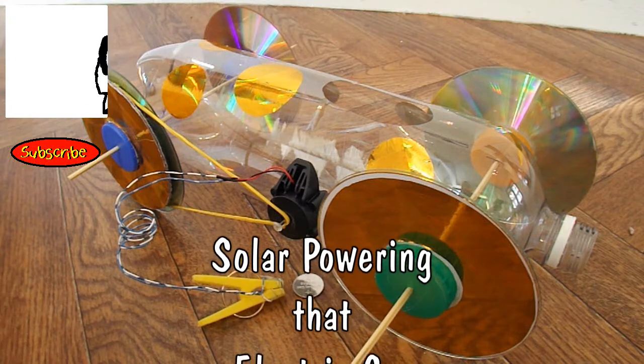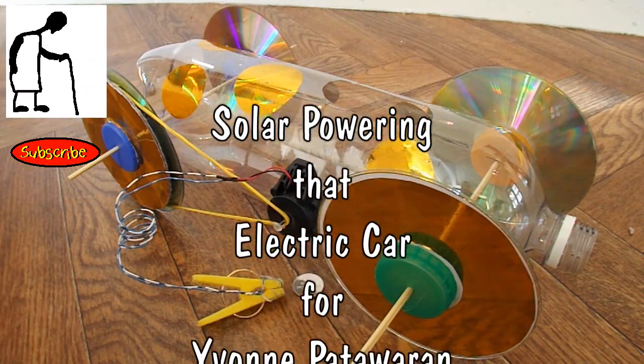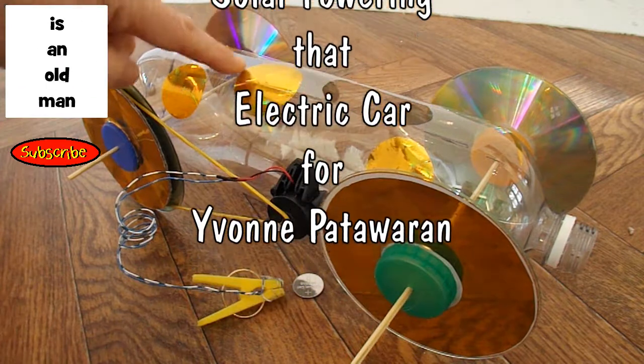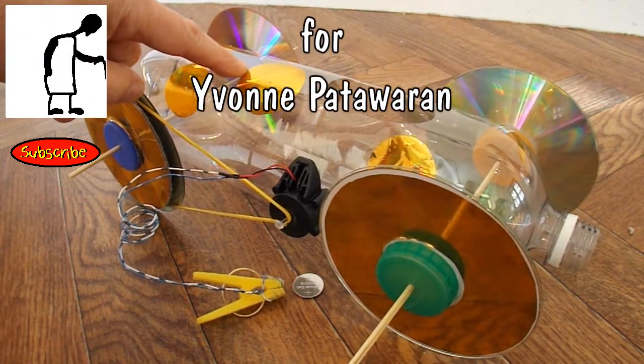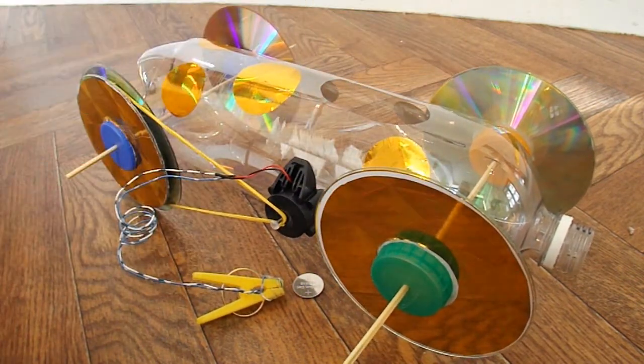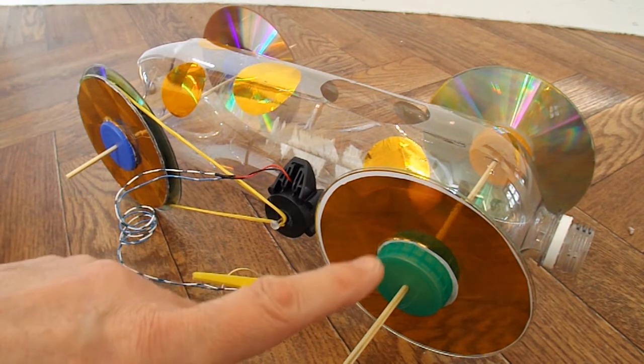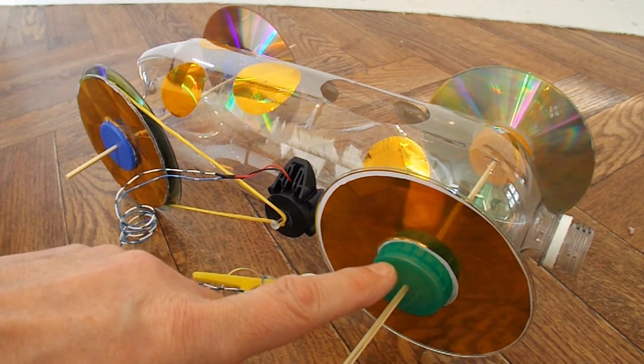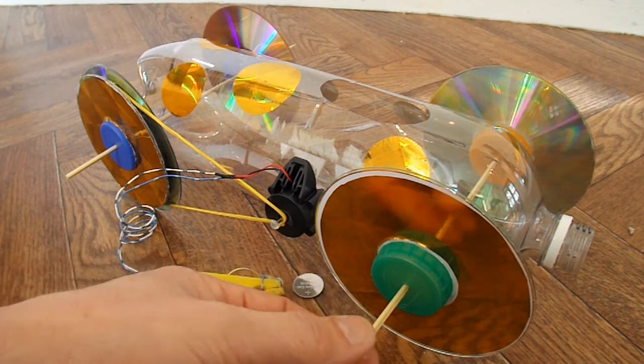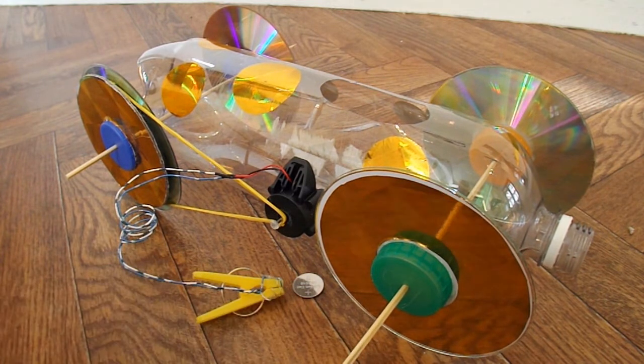Summary time. What have we got? We've got a plastic pop bottle, got four CDs for wheels, milk bottle tops for the hubs, barbecue skewers for the axles.